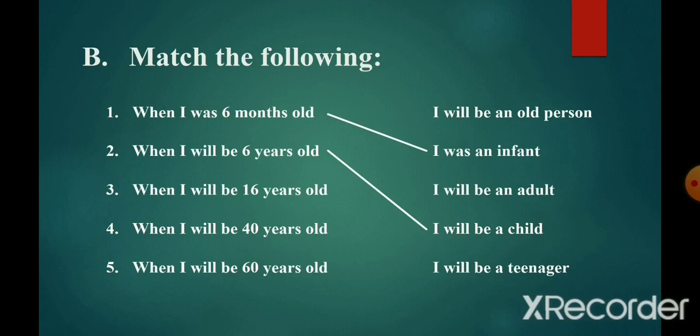Number three: When I will be 16 years old, the answer is I will be a teenager. Number four: When I will be 40 years old, the answer is I will be an adult. Number five: When I will be 60 years old, the answer is I will be an old person.